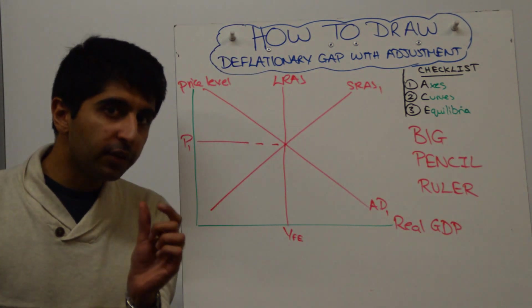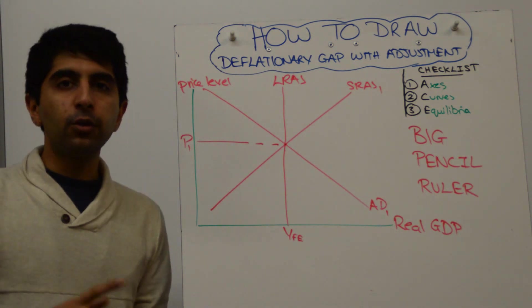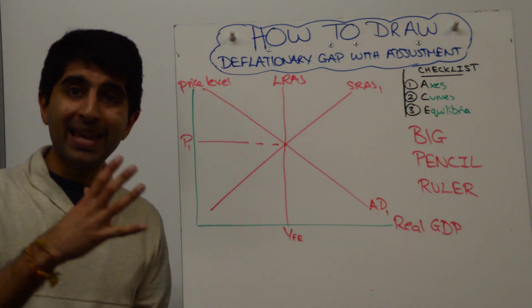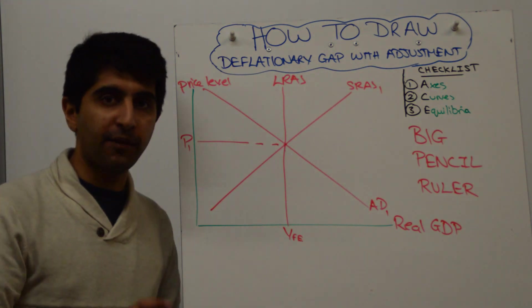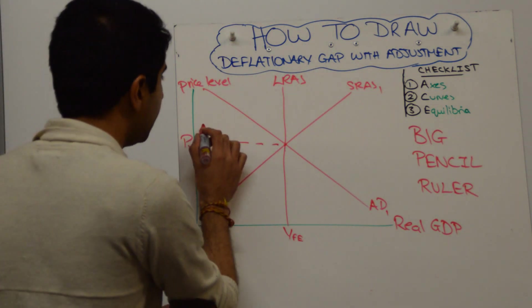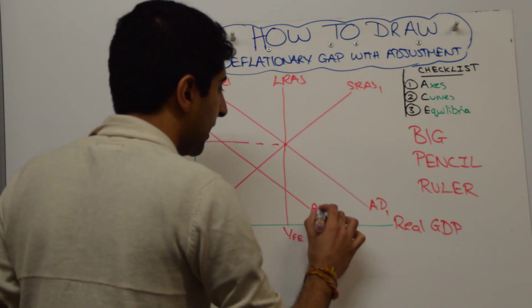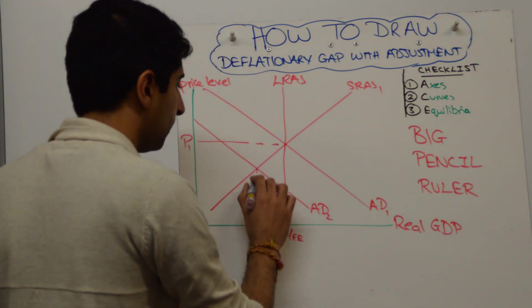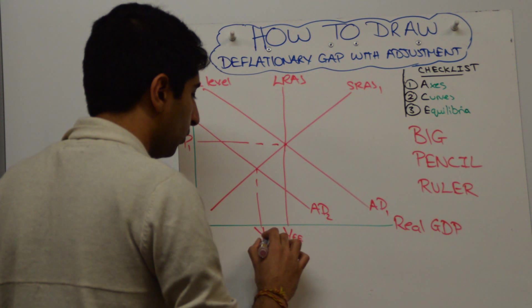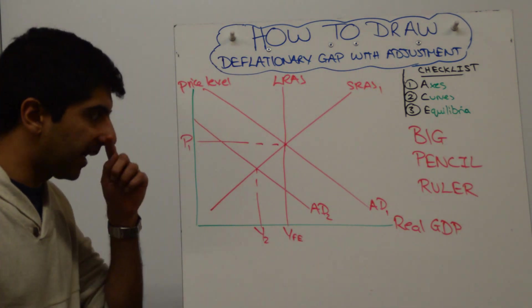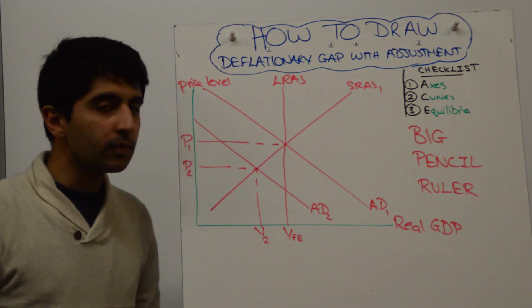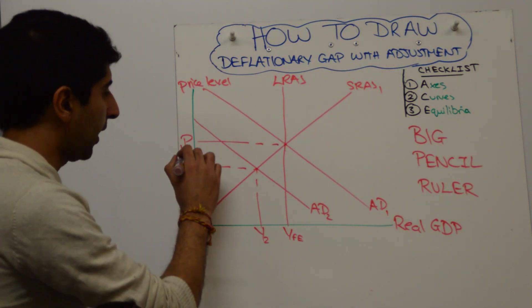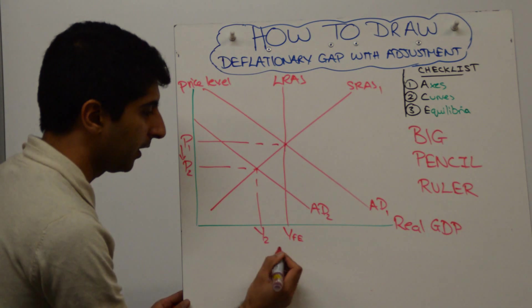Now we want to show the deflationary gap. How do we show a deflationary gap? Remember AD, where AD cuts SRAS is less than the full employment level of output. So what you want to draw is an AD shift to the left from AD1 to AD2, which takes us to Y2 on the diagram, call it that, and a price level of P2. That's good. And just draw a downward arrow to show that movement there.